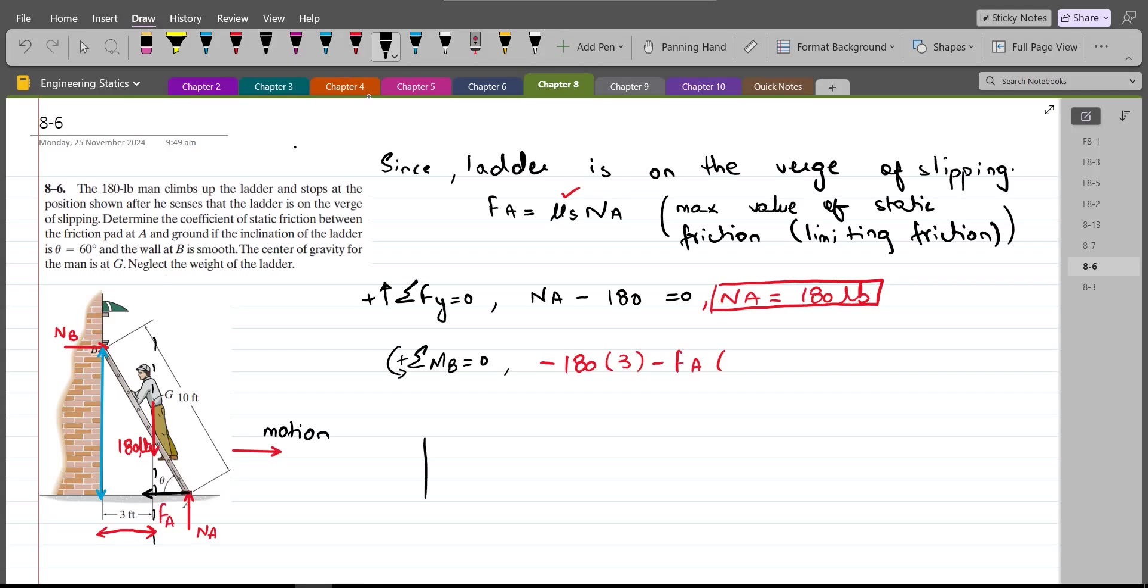So if I have this triangle, let me draw it separately. This is 10 feet and this is theta. And theta is given as 60 degrees. And I have to find this distance. Let's call this Y, which is the same as this distance. So Y would be 10 sin theta and theta is 60 degrees.